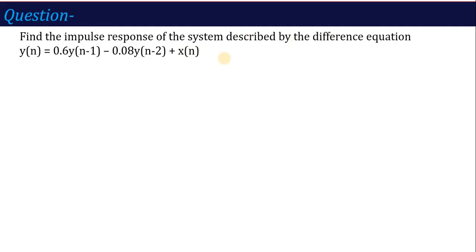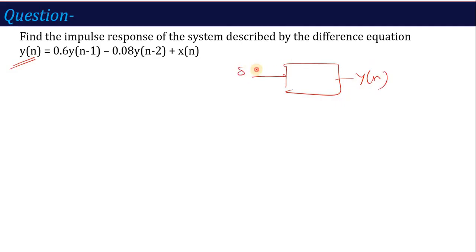Now, what is the difference in this question compared to what we previously studied? If you study and understand this question, you will relate. Until now, we studied equations applied here. What did we say? Find the impulse response. What is the impulse response? The output of the system, Y(N), is the impulse response of an LTI system when the input applied is delta(N).